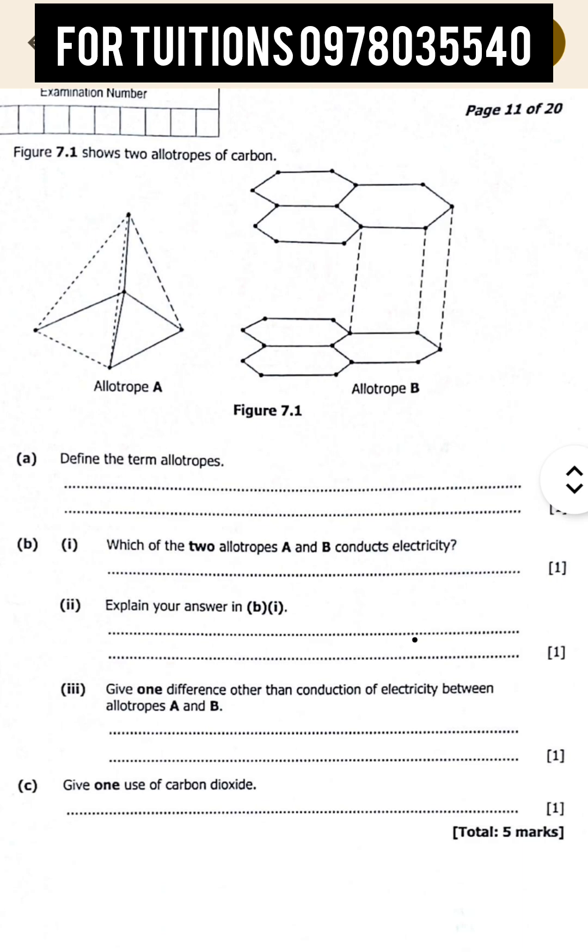Allotropes are atoms of the same element but different physical forms. That is how you define allotropes. Which of the two allotropes A and B conducts electricity?